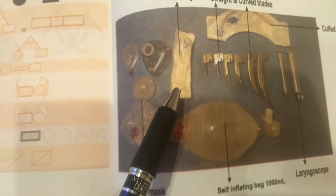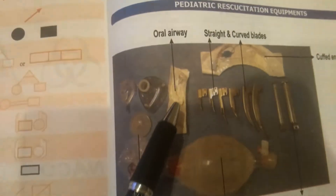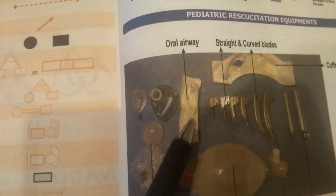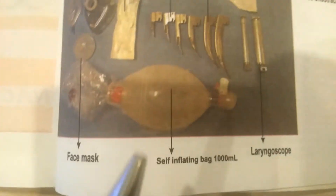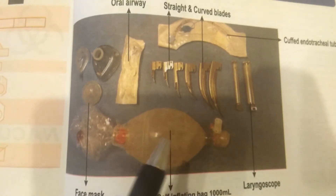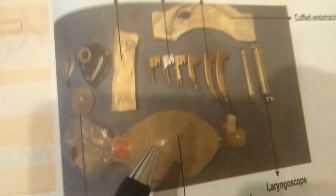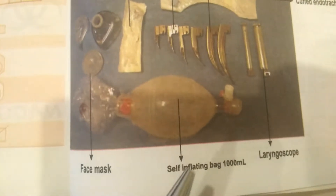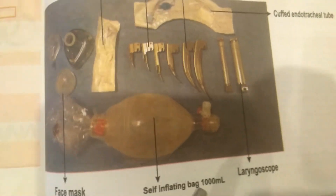This one in a packet — inside this is an oral airway. When the tongue falls, we need to use this oral airway. We use this in anesthesia also. Sometimes we use this with a self-inflating bag — one liter or thousand ml capacity.